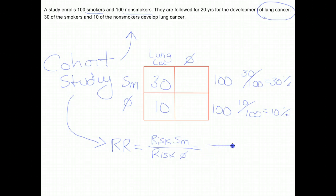Now I can just plug these numbers in. The risk in the smokers is 30%, the risk in the nonsmokers is 10%. You should express this as a decimal, so 0.3 divided by 0.1. When you do that, your relative risk comes out to 3. So people who smoke are three times more likely to develop lung cancer in this particular study than people who don't smoke.